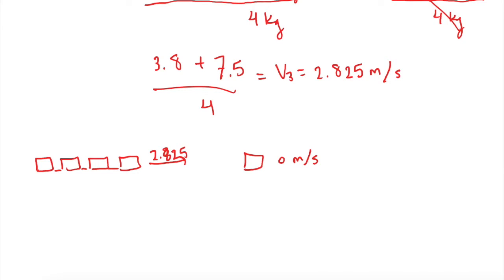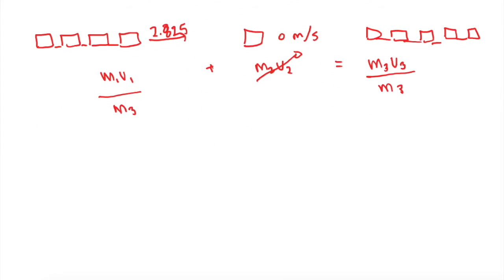So now we have M1V1 plus M2V2 is equal to M3V3, which is now going to be 5 of these guys. Well, V2 right here is 0 meters per second, so this whole term is going to go away because we'll have M2 times 0. So now we have M1V1 equals M3V3, and we want to solve for the final speed of the 5-car train. So let's divide over M3.